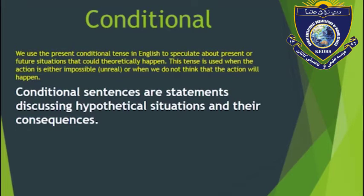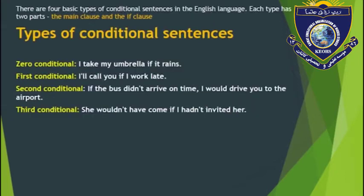Theoretically or hypothetically means unreal — an action which is not real, we are just imagining or thinking that it might happen. There are basically four types of conditional sentence, and each consists of two parts: the main clause and the if-clause. The four types are: zero conditional, first conditional, second conditional, and third conditional. We will study all of them one by one.